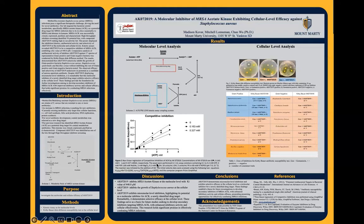Here is a graph of a non-linear regression of competitive inhibition of ACK by AK07-2019. On the graph, you can see three different symbols representing different concentrations of AK07-2019. The circle represents no AK07-2019 present, the square represents a 0.163 millimolar concentration, and the diamond represents a 0.327 millimolar concentration. This graph confirmed AK07-2019 as a molecular inhibitor with a KI value of 448 micromolar, derived using GraphPad Prism.